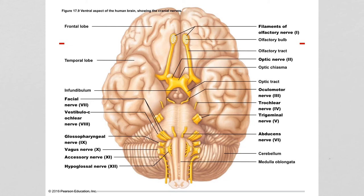I'm not going to share any mnemonics, but if you search for 'mnemonic cranial nerves' online, you'll find plenty. I am going to tell you how I study the cranial nerves. The first three start with O — olfactory, optic, oculomotor — so I think OOO.